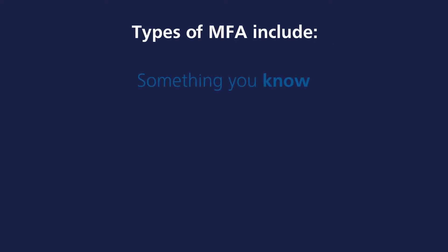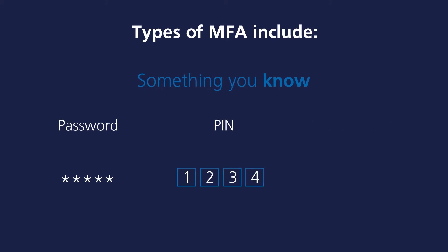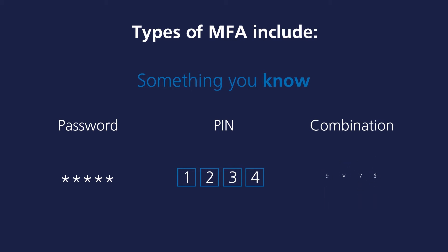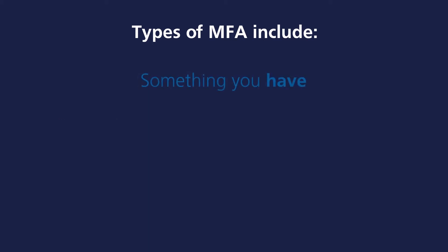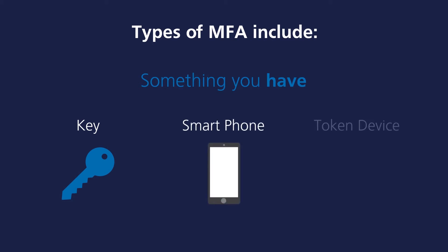Types of MFA include something you know, such as a password, a PIN, or a combination. Something you have, such as a key, a smartphone, or a token device.